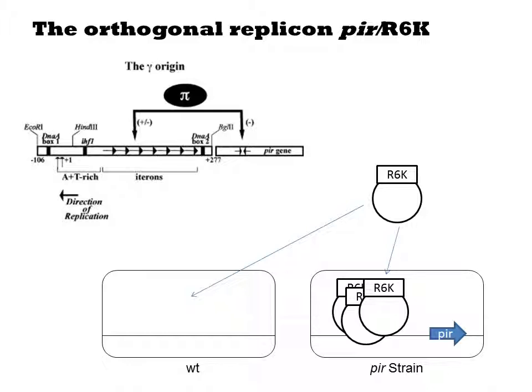The value of this system is that it is very strict. Without pi, there is no detectable replication of R6K plasmids, but with it, the plasmids can be replicated very stably. Additionally, strains such as the dial strains have been developed that allow you to tune the concentration of pi in the cell, and thus ramp up or down the copy number of the plasmid.